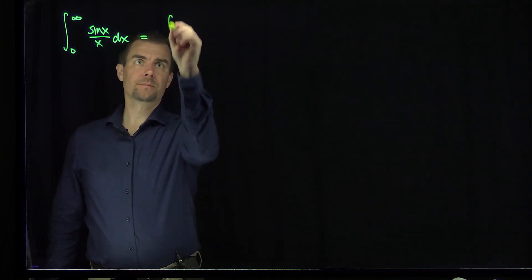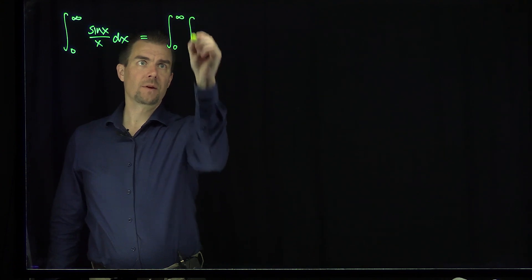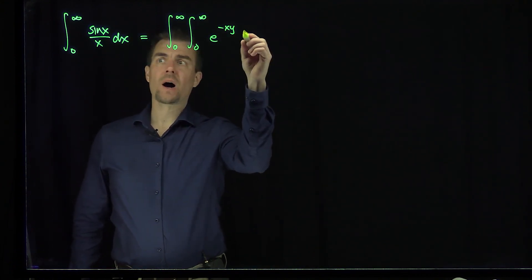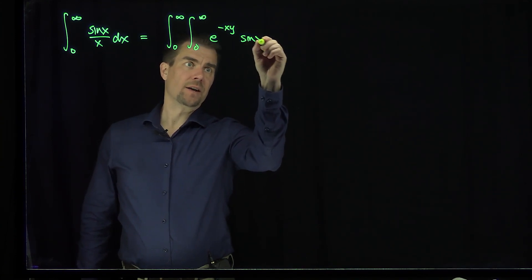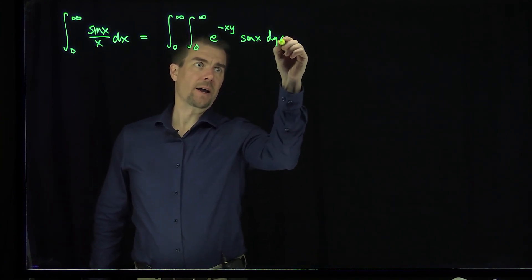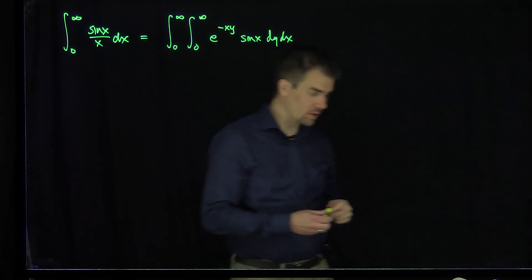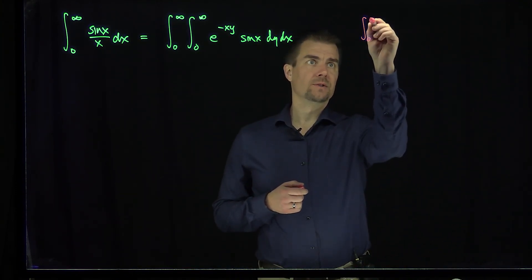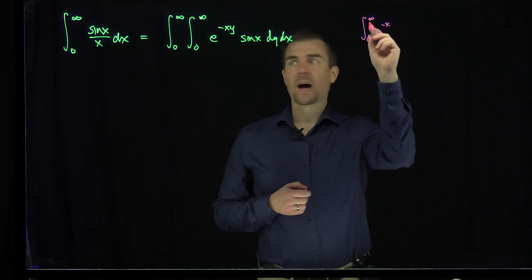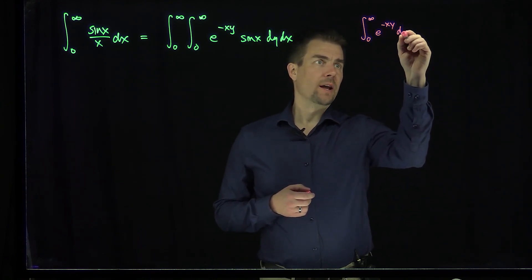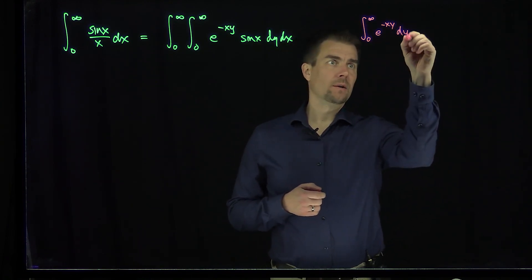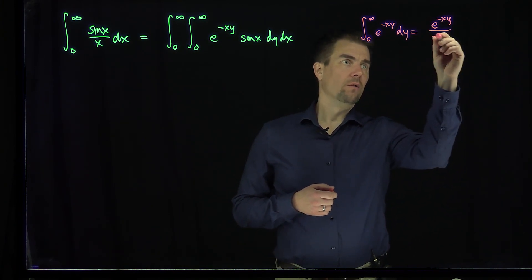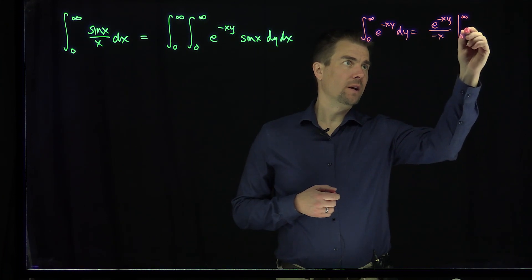We're going to write this as the double integral from zero to infinity — the integral from zero to infinity of e to the negative xy, and then sine of x, then dy dx. We can check to see this works, because if we look at the antiderivative and simply evaluate the integral from zero to infinity of e to the negative xy dy, that would be e to the negative xy over negative x evaluated from zero to infinity.